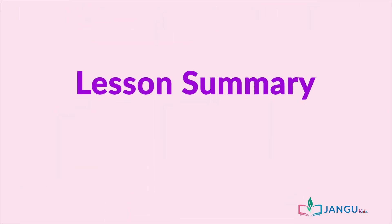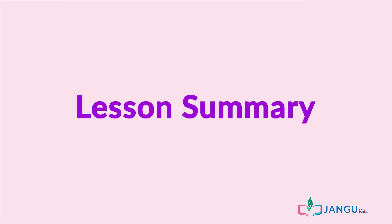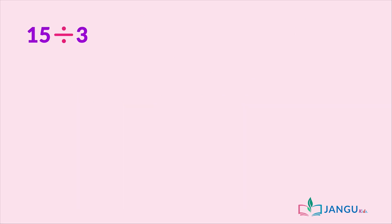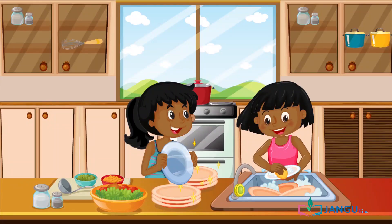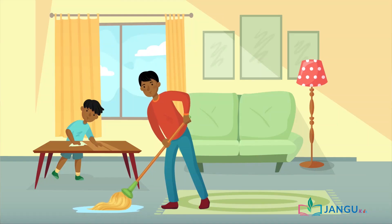We have come to the end of the lesson. Today, we have learned to divide whole numbers below 48 by 2, 3, 4, 5, and 6 without remainders and carry out division correctly in everyday activities.